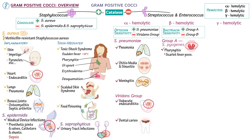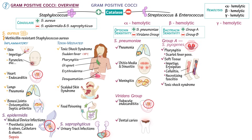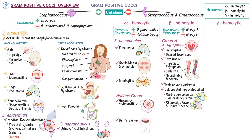Group A streptococcus is also responsible for a variety of soft tissue infections, which can range from impetigo and erysipelas to the more serious cellulitis or even necrotizing fasciitis. Like Staphylococcus aureus, group A streptococcus can cause toxic shock syndrome. A delayed antibody-mediated reaction to group A streptococcus infection can occur in some patients and may produce post-streptococcal glomerulonephritis or rheumatic fever.